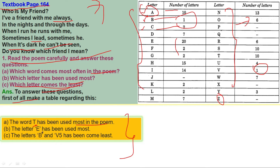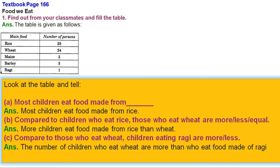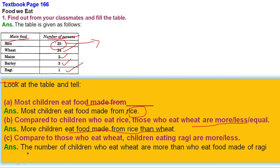Find out from your classmates and fill the table with the number of times. Also, find out about eating habits — children who eat food made from rice are more than those who eat wheat. Compared to those who eat wheat, children eating ragi are fewer; the number of children who eat wheat is more than those who eat food made from ragi.